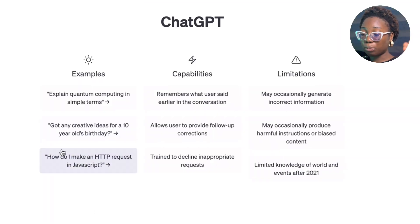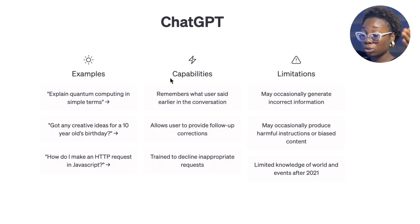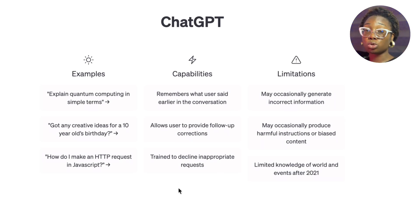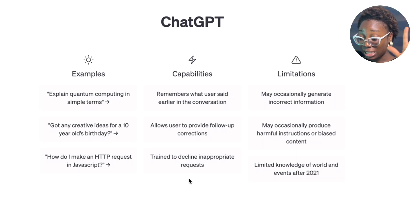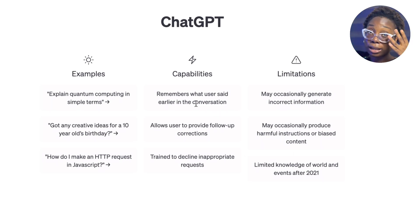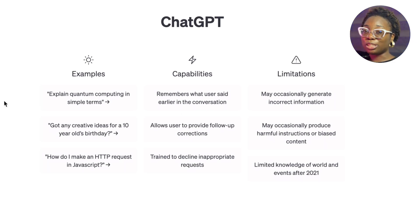ChatGPT has some things here that explain its capabilities: it remembers what the user has said, meaning you can have a conversation with it; it allows users to provide follow-up corrections; and it's trained to decline inappropriate requests. For limitations: it may occasionally generate incorrect information, it has limited knowledge of world events after 2021, and it may occasionally produce biased content. They've already told you about these limitations upfront.